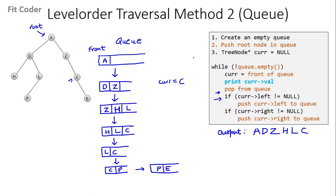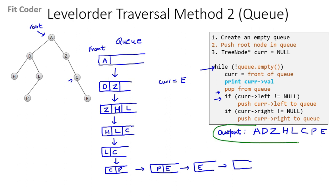In the next iteration, current becomes P — we print P, pop from the queue. Left and right of P are both null. Then current becomes E — we print E, pop from the queue so the queue is now empty. Left and right of E are null. In the next iteration we check if q is empty — it is, so the while loop terminates. This is our level order traversal, and since every node is visited only once, the time complexity is O(n).